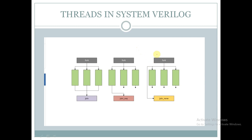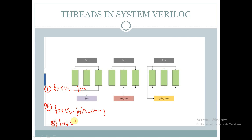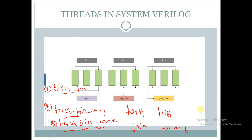In SystemVerilog we have three types of threads. The first one is fork-join, the second one is fork-join-any, and the third one is fork-join-none.